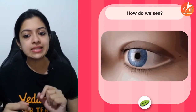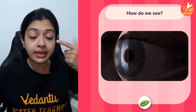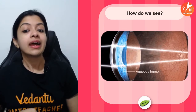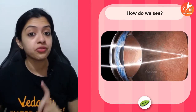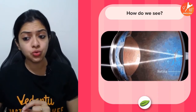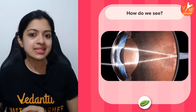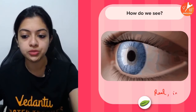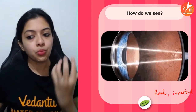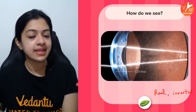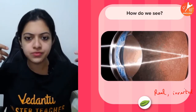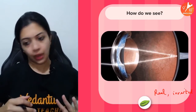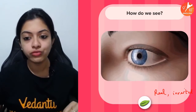Now, how do we see? Light rays enter the eye and pass through the cornea first, where they get bent. The next bending occurs when they pass through the biconvex lens. The light ultimately converges on the retina, where a real inverted image is formed. The messages from that image are sent through the optic nerves to the brain, which perceives all this information and identifies the object in its upright form. This is the mechanism of vision.